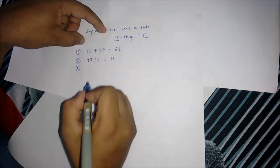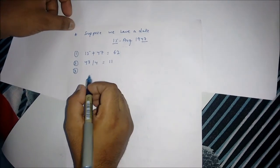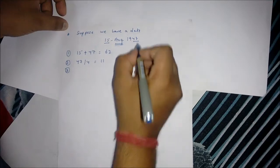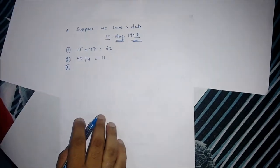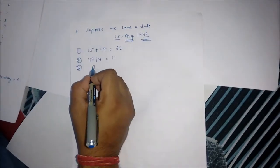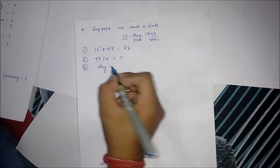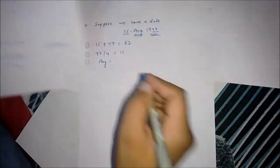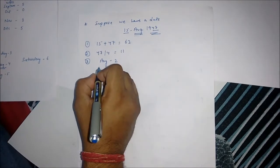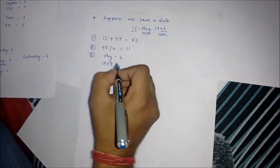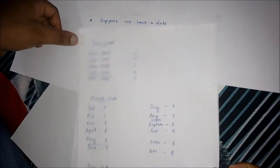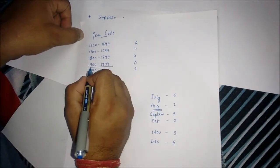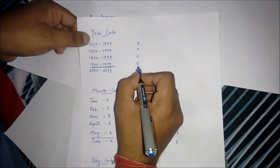Third step: analyze the month code and year code. For August, as mentioned in our table, the code is 2. For 1947, our year lies in this range and we get the value as 0.